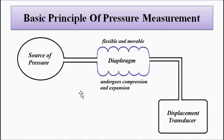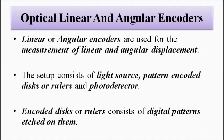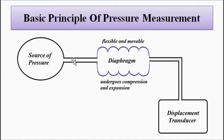The basic principle which involves is that we connect a diaphragm kind of a setup to the source of pressure, the body part where pressure is to be measured. When the diaphragm is subjected to pressure, it undergoes compression and expansion which causes the displacement transducer to respond to that fluctuation, that compression and expansion, and gives us a signal.